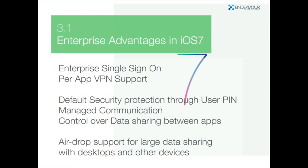In iOS 7, any app installed on a device will be automatically encrypted even if the app has not been launched. Also in iOS 7, we can restrict backing up keychain values to any new device. An IT admin can manage the list of third-party apps that can be used to open any file, preventing risk of sending data to untrusted third-party apps. Via MDM — mobile device management — we can restrict which apps can use cellular data and which cannot, giving organizations greater control over data usage and costs.